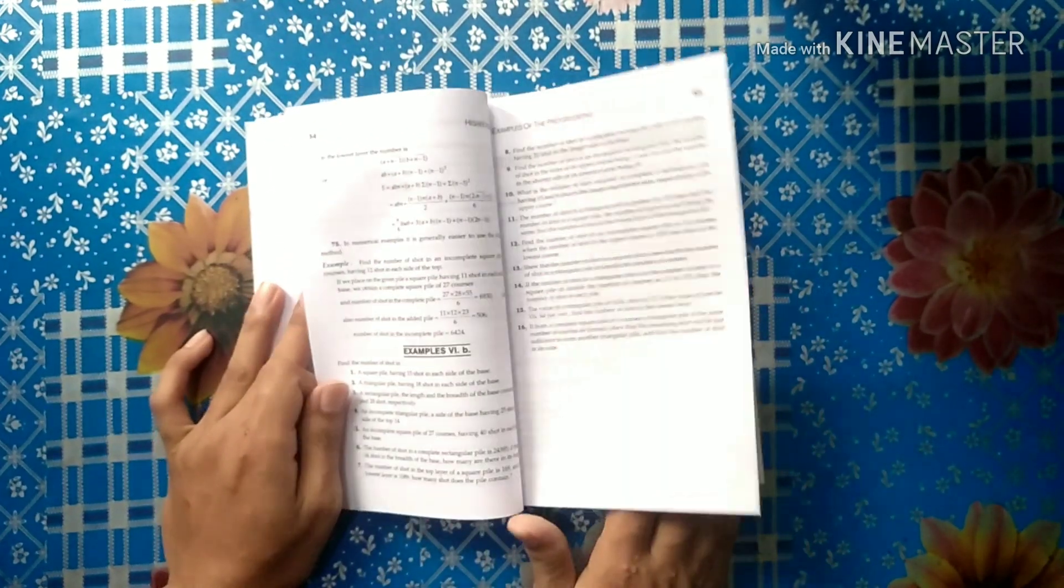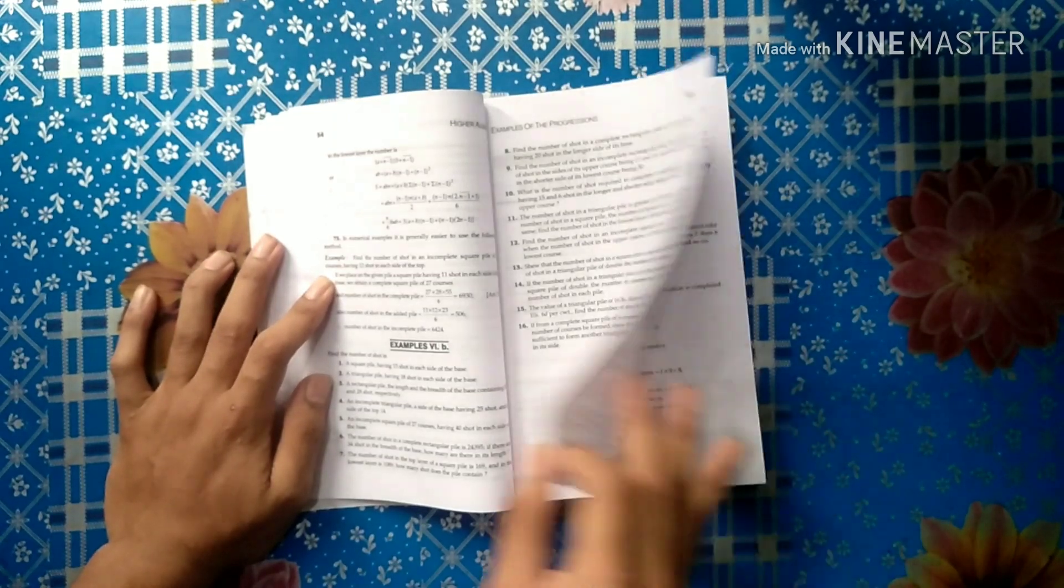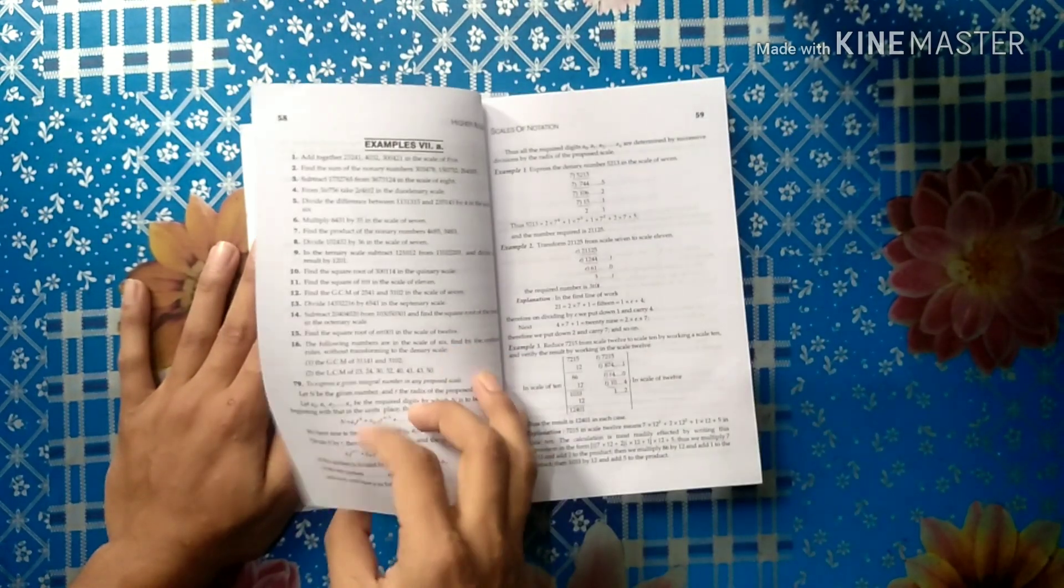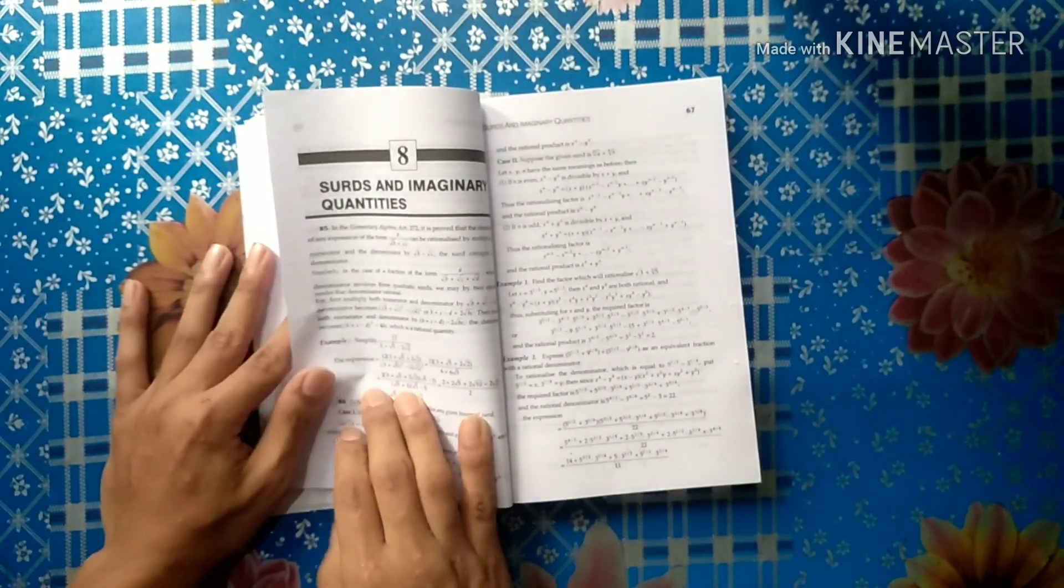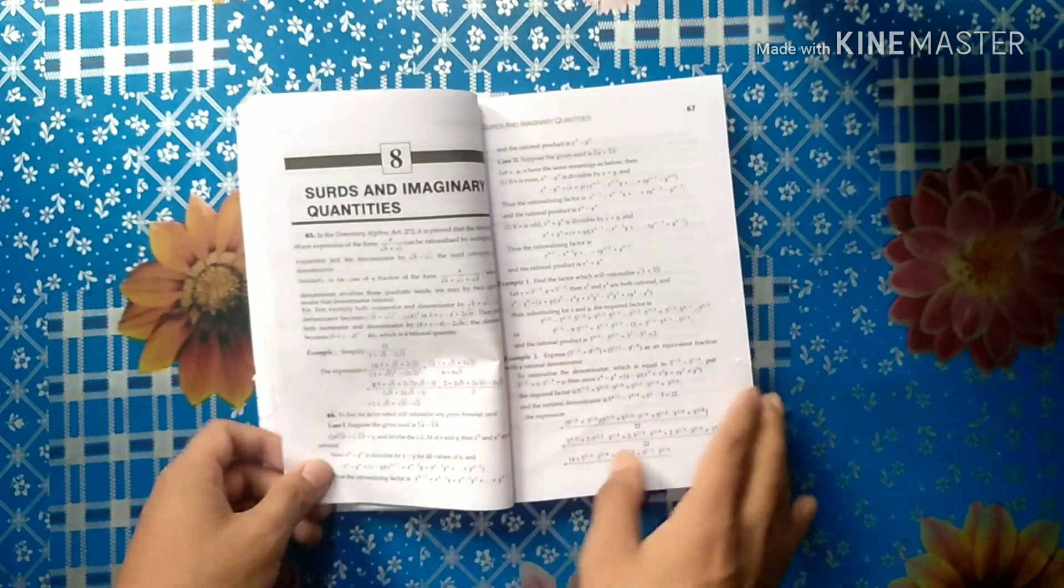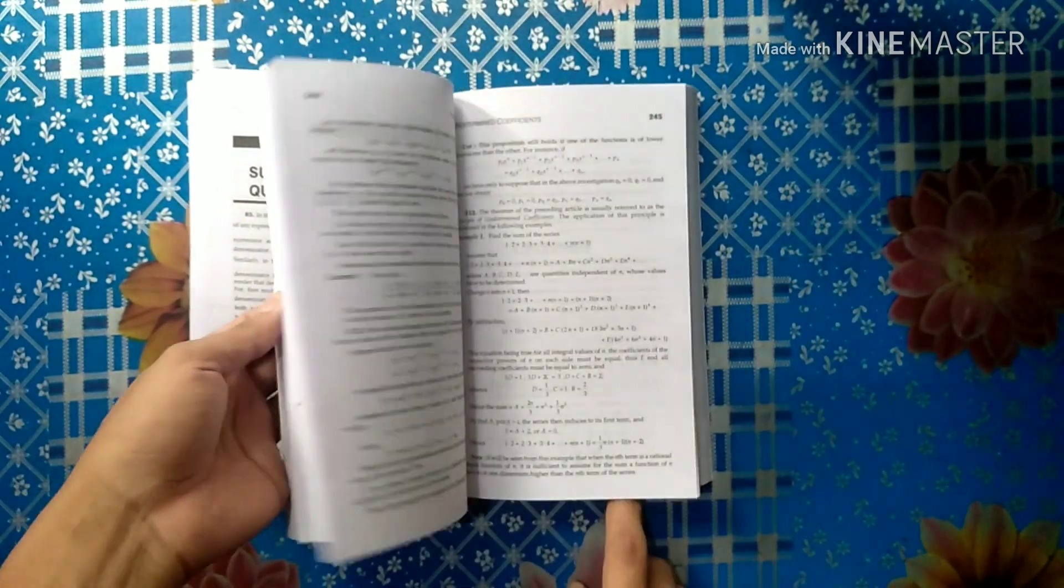Someone who is very much interested in mathematics can start doing this book from class 9 onwards. Imaginary numbers, imaginary quantities. Very good book it is.